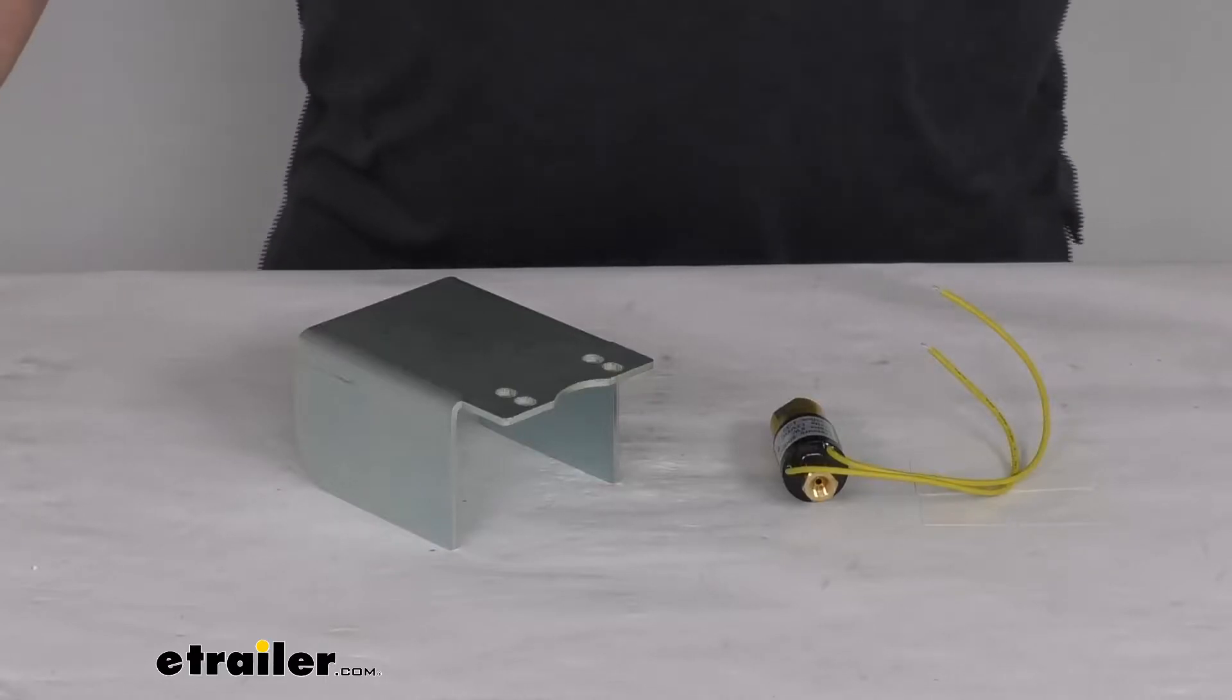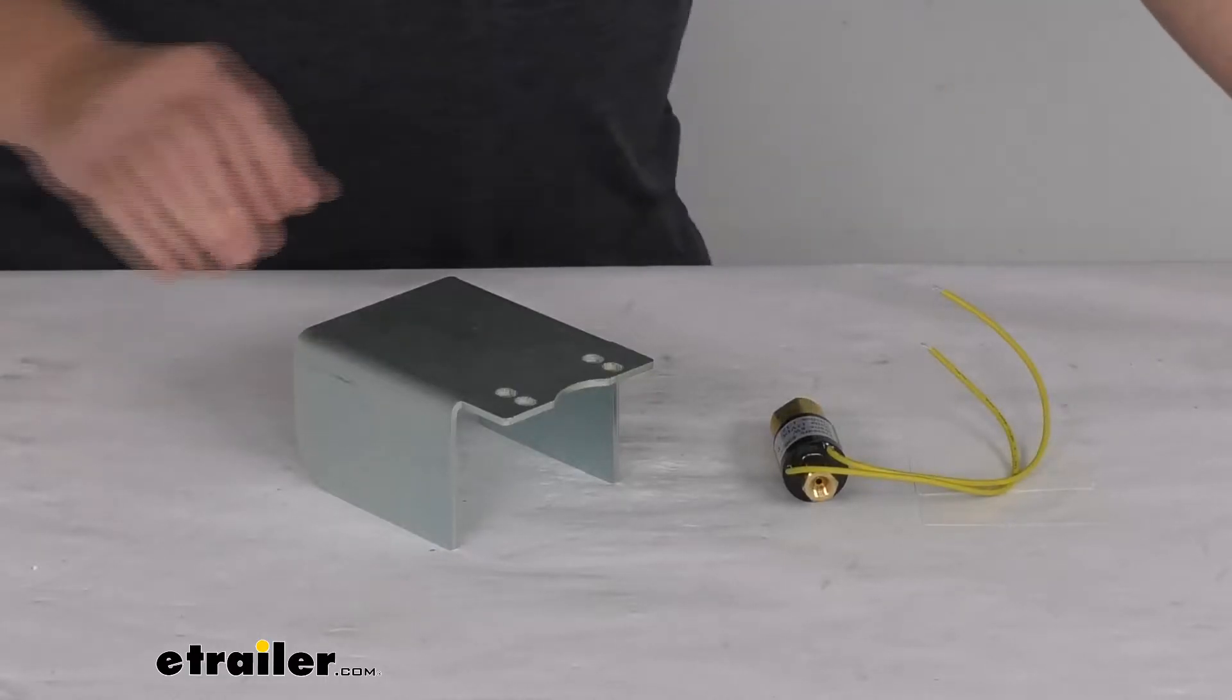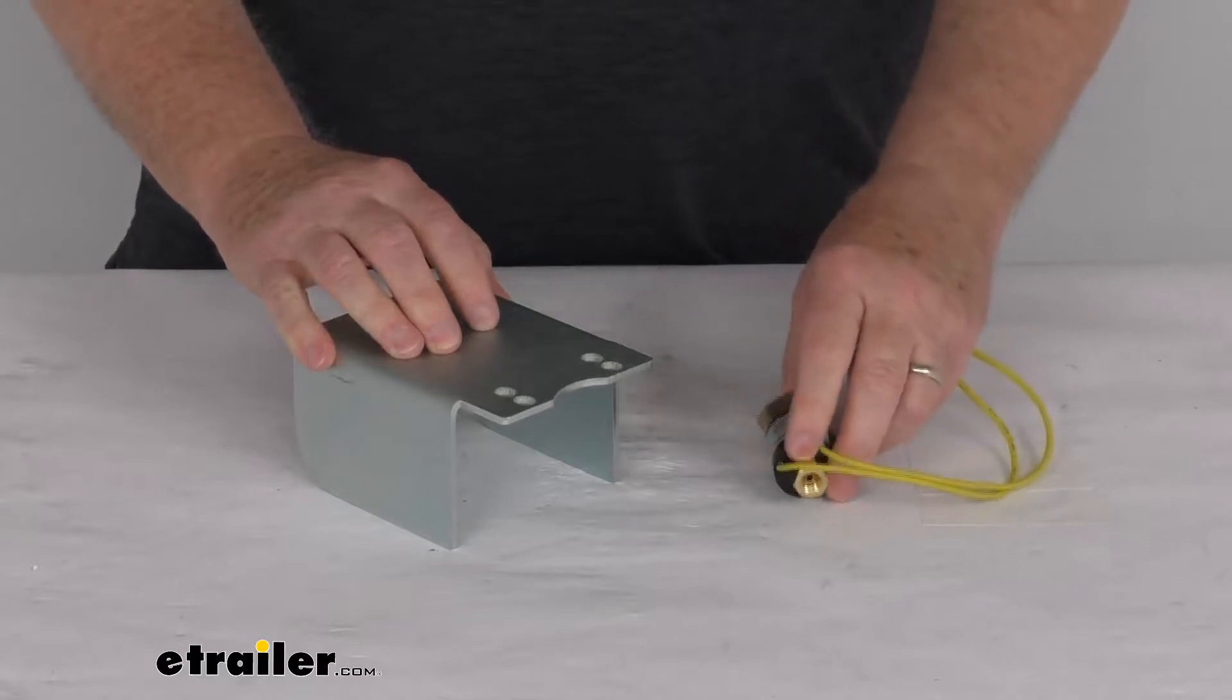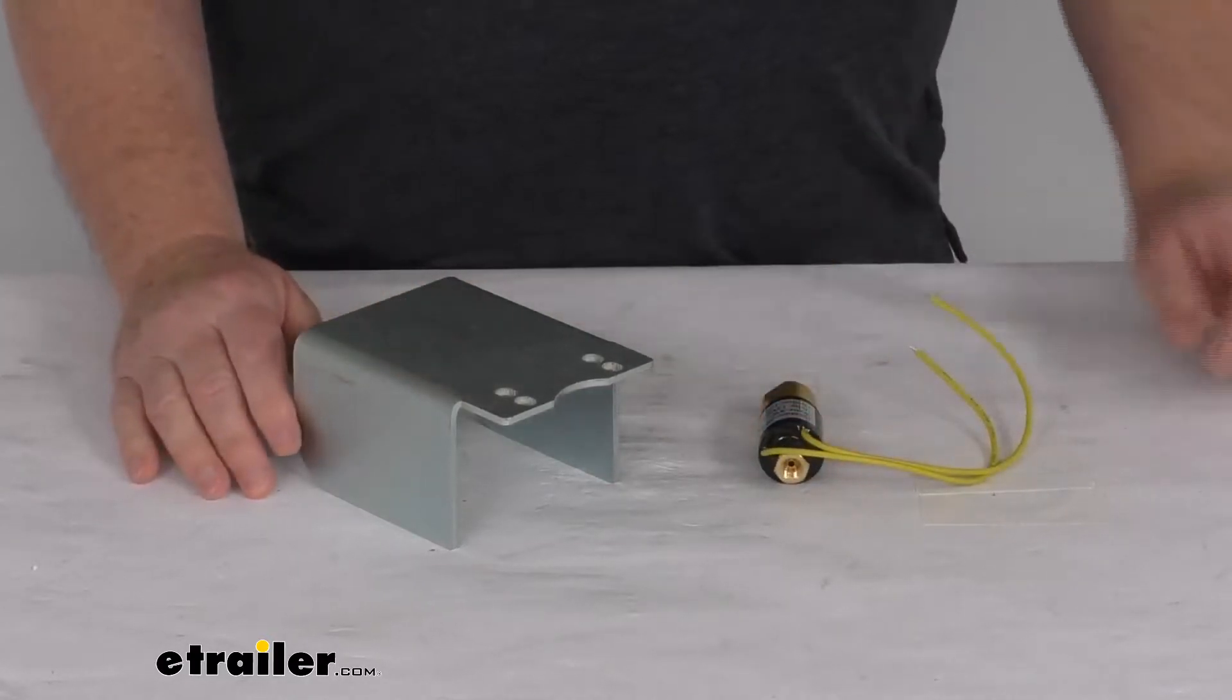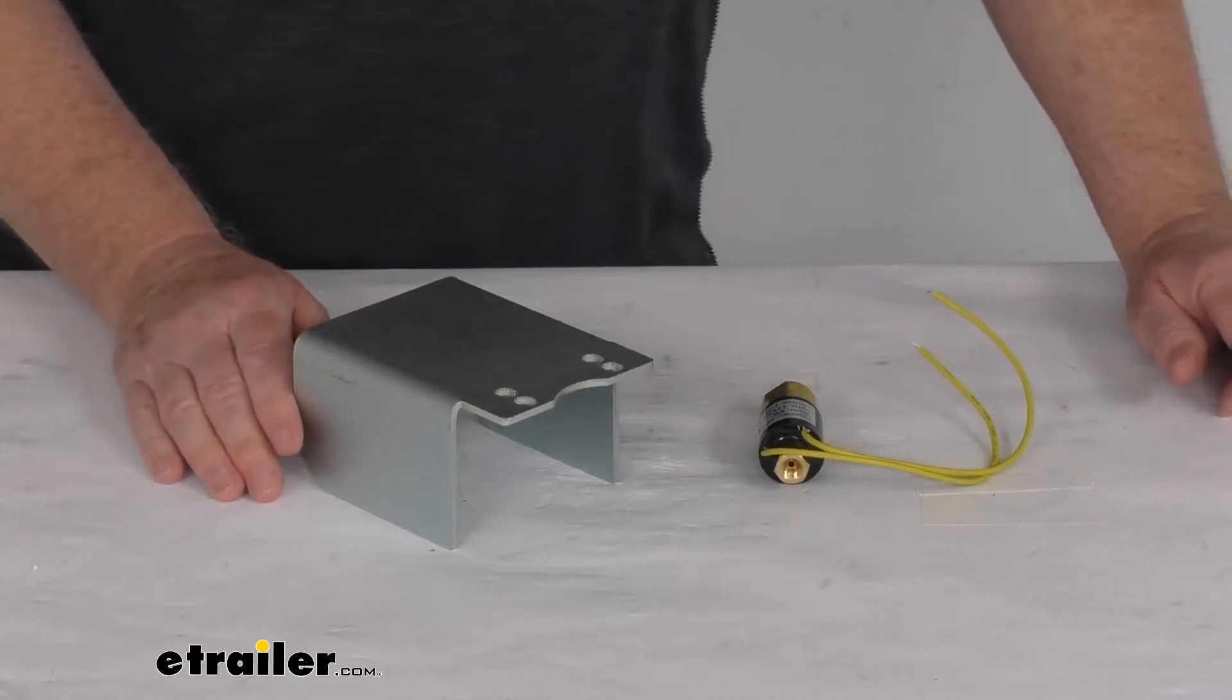Hello everybody, this is Jeff at eTrailer.com. Today we're going to take a look at the non-bypass reverse lockout solenoid kit for the Demco DA10 and DA91 hydraulic brake actuators.